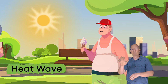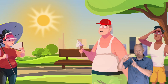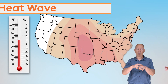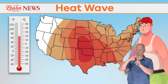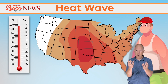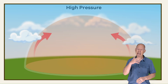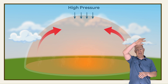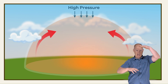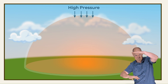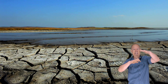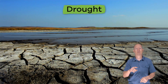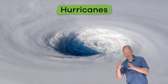Have you ever experienced a heat wave? A heat wave isn't your average hot summer day. Instead, it means that there are higher than normal temperatures in a region, which happens when high pressure in the Earth's atmosphere builds up and holds hot air on the Earth's surface. This decreases the chance of rain, which can lead to another natural disaster we have already discussed — drought.